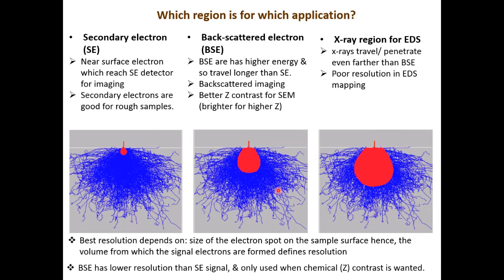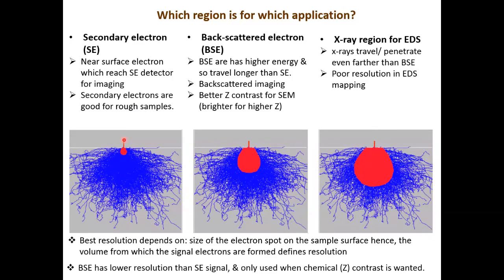As a summary: secondary electrons come from a much lesser depth and lateral spread below the surface, whereas backscattered electrons come from a much greater depth and lateral spread, and characteristic X-rays used for EDS come from even greater depth and lateral spread. So the resolution of imaging goes from best (secondary electron imaging) to poorer (backscattered electron imaging) to not very good (EDS analysis). The resolution is best for secondary electron imaging, not as great for backscattered electrons, and not really great for any imaging or analysis done using EDS.